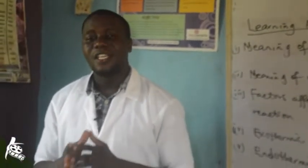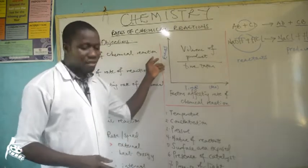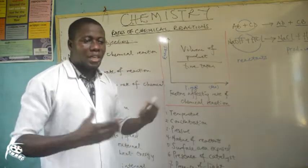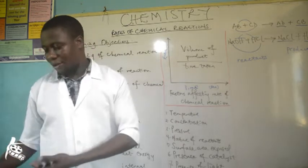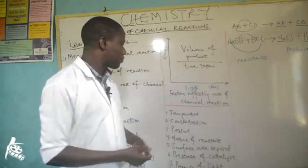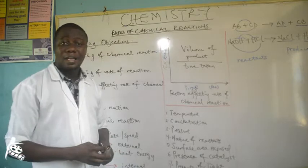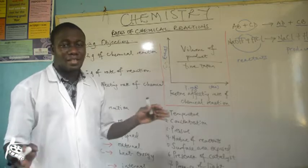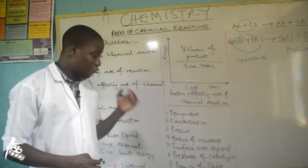In our subsequent classes we will take you to the laboratory and you will see how this happens very well. The graph of the reaction rate is usually drawn like this: energy against time. The energy which could be in calories or joules. We measure this in joules over time in seconds.